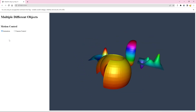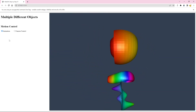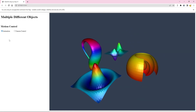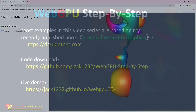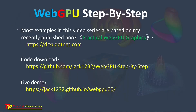We have completed this example. In the next video, we will discuss how to create different objects in a single scene using different pipelines. Most examples in this video series are based on my recently published book, Practical WebGPU Graphics. From the link drsu.net.com, you can see details about the book. I have also created a GitHub repository to host the source code and a live demo showing results from all the example projects. See you next time. Bye!